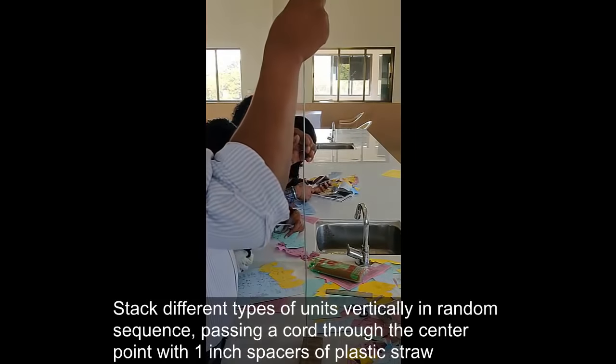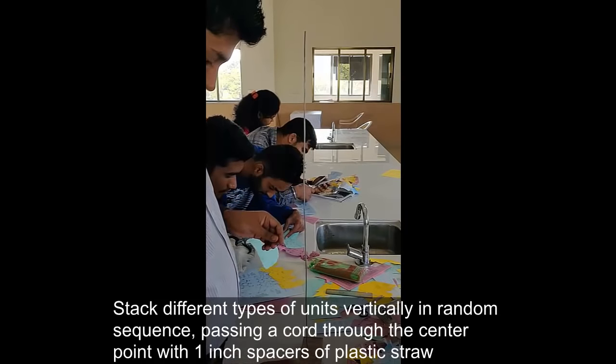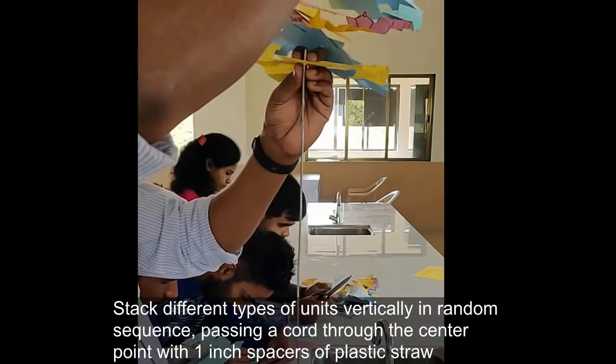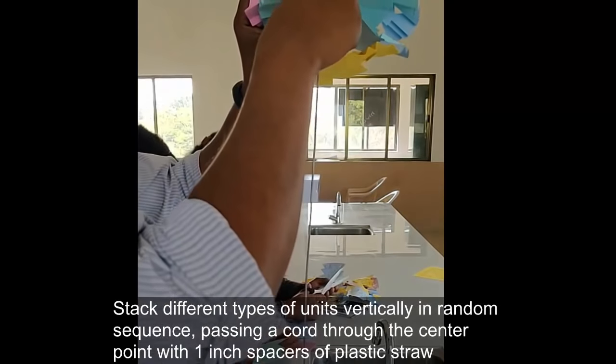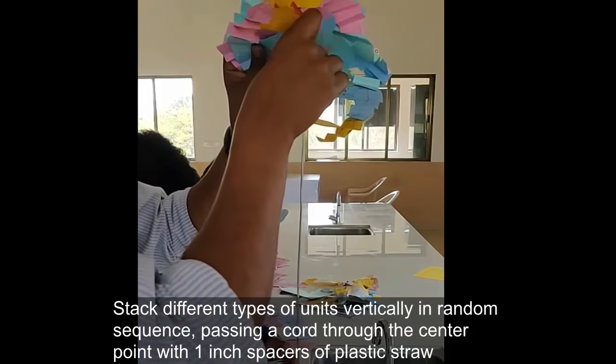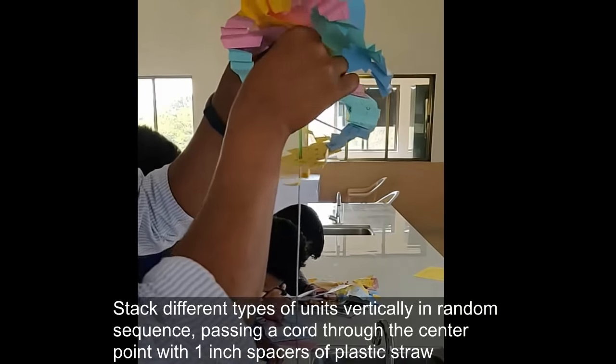Stack different types of units vertically in a random sequence, passing a cord through the center point with 1 inch spacers and plastic straw as shown in the video. Be very careful with this process. Since the paper is delicate, make sure you do not tear it up.